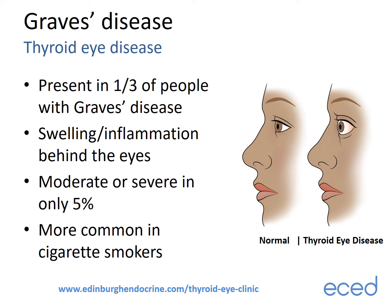As well as affecting the thyroid, Graves disease can also affect the eyes. Eye disease occurs in around a third of people with Graves disease. This is caused by swelling and inflammation behind the eyes and can cause symptoms such as dry eyes, grittiness, and discomfort, but also in severe cases can affect the vision, including double vision and pain in the eyes. It can also result in a bulging appearance of the eyes. Thankfully, moderate or severe disease is limited to around 5% of cases. Eye disease is twice as common in smokers and eight times more common in heavy smokers, so stopping smoking is important and reduces this risk.